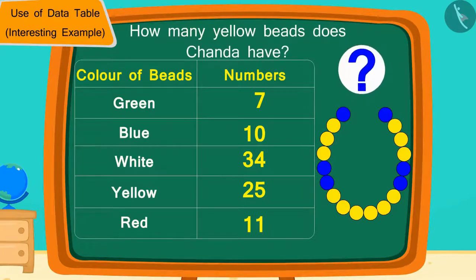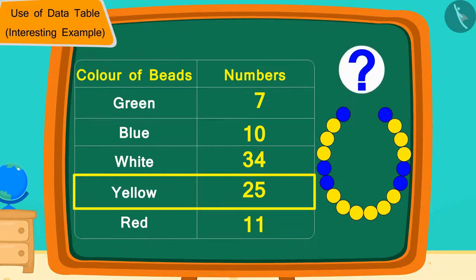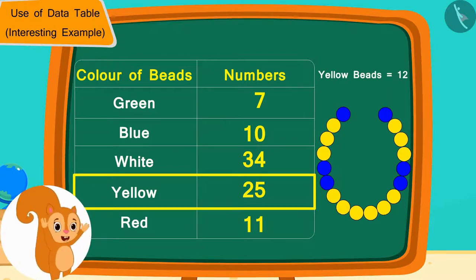In the same way, how many yellow beads does Chanda have? 25. And how many yellow beads does she need? 12. In this way, Chanda also has enough yellow beads for making the necklace.